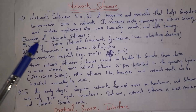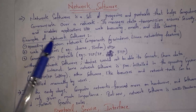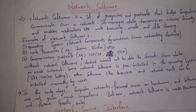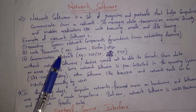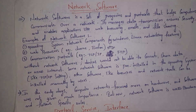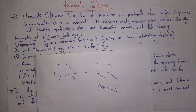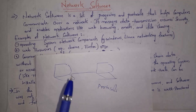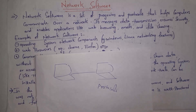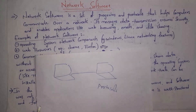The first example of network software is operating system network components. Operating systems like Windows and Linux each contain network software. By using this network software, computers can communicate with each other — they can share files, songs, movies, etc. For example, if I want to copy songs from my laptop to my friend's laptop, I connect the two laptops using a cable and copy the files. This file transfer is successful because of network software.